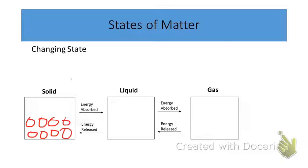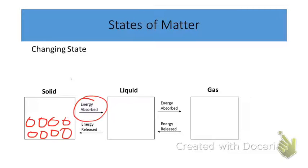As the solid begins to gain more kinetic energy, the particles are going to begin to have more movement and motion. The forces of attraction between the particles are going to begin to diminish — they're going to get smaller. This allows the particles now to have more freedom of motion, and as more and more kinetic energy is added, they will have more and more freedom of movement, to the point we get to the liquid state.